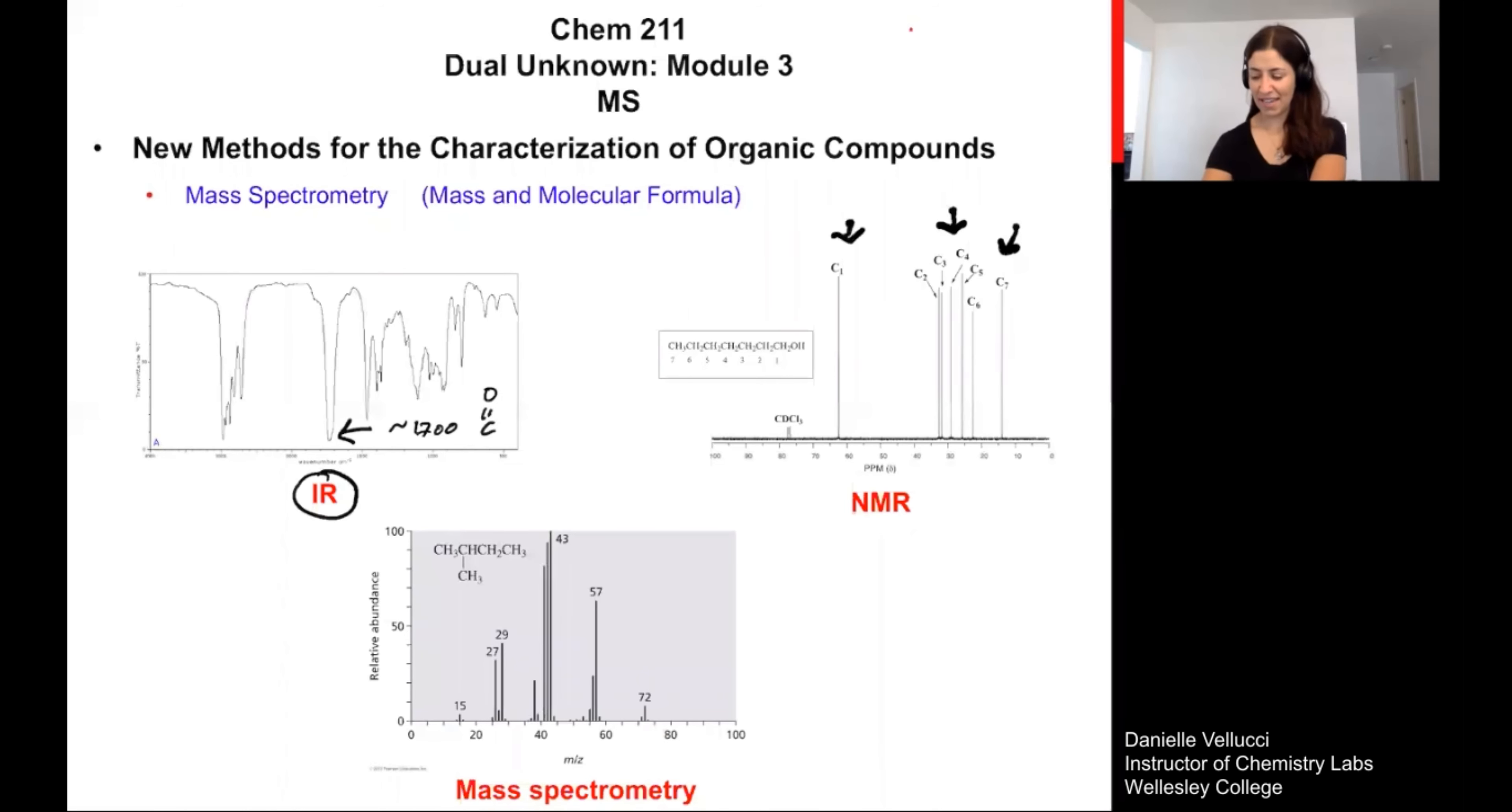The last piece of data is going to be a mass spectrum. And that data is going to look very similar to this picture here. We're going to talk about how to interpret this and how to use all of the specific information embedded within this spectra to confirm the final identity of your molecule.